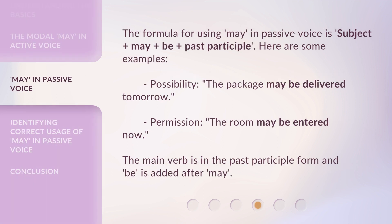The formula for using may in passive voice is: subject + may + be + past participle. Here are some examples. Possibility: 'The package may be delivered tomorrow.' Permission: 'The room may be entered now.' The main verb is in the past participle form and be is added after may.